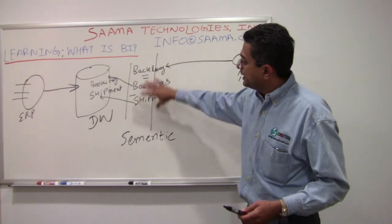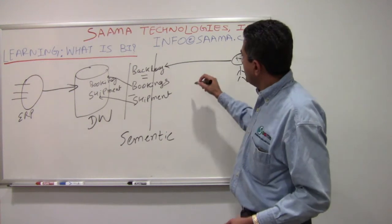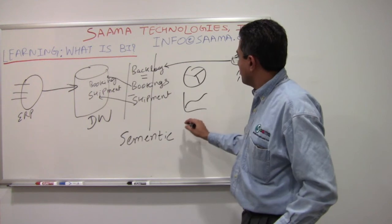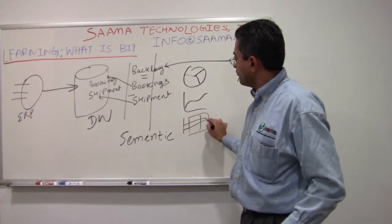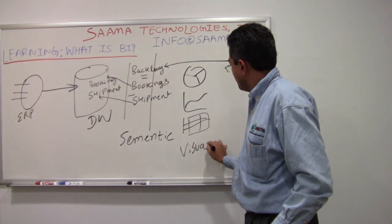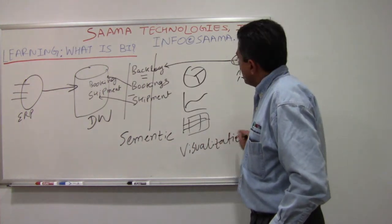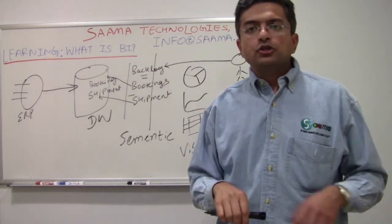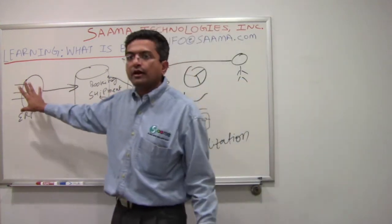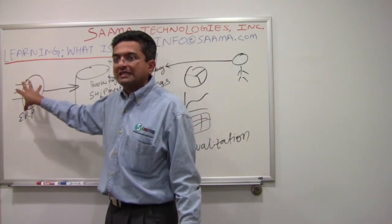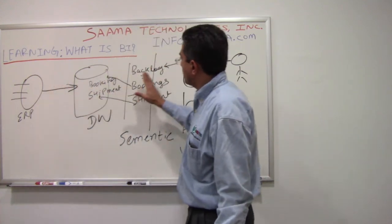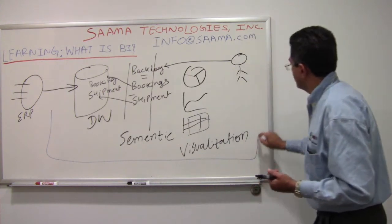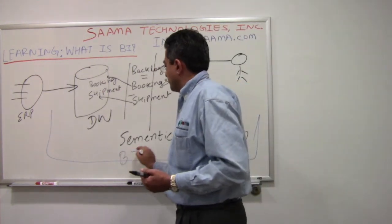That's the job of the semantic layer. Finally, there is a visualization layer, which allows you to create bar charts, tables, and other forms of visualizations to interact with the data. This whole process — except for capturing the raw transactions — everything from extraction through to visualization we could term as business intelligence.